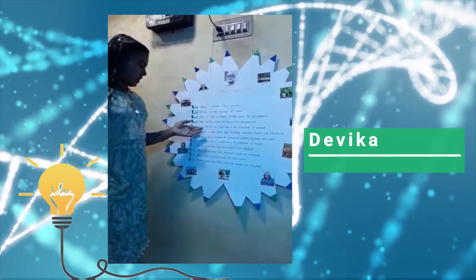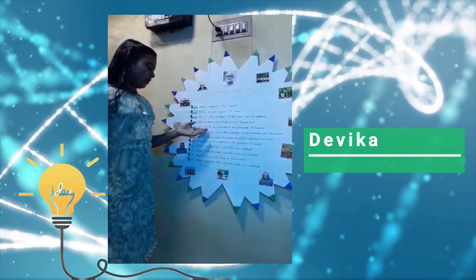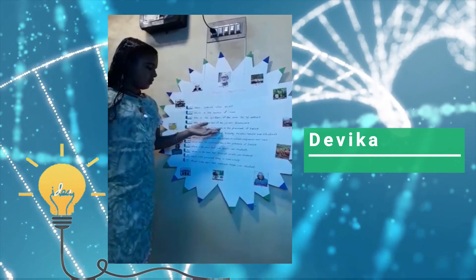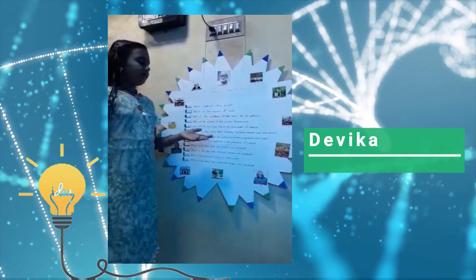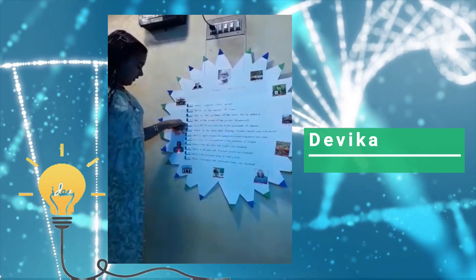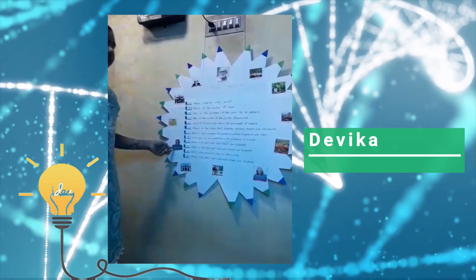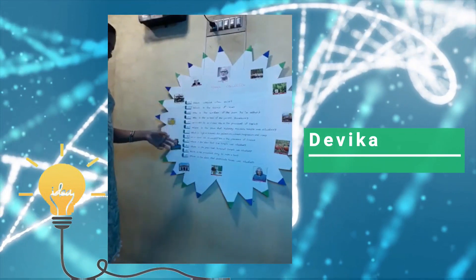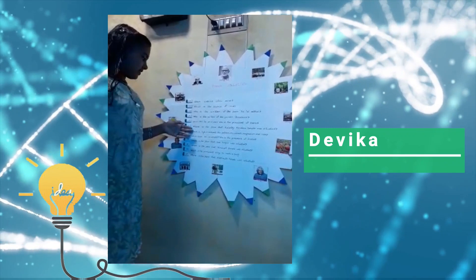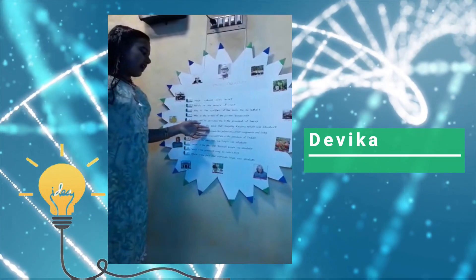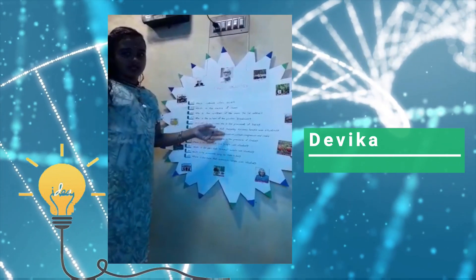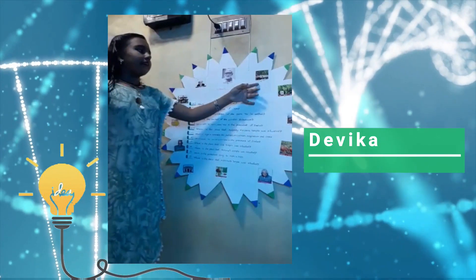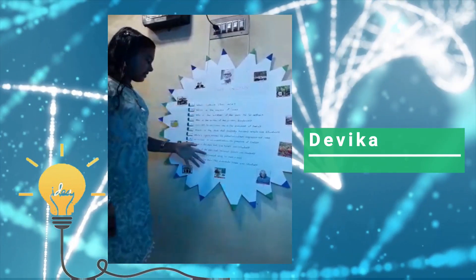The fifth question is: from 25.7.1997 to 25.7.2002, who was the President of India? We click the fifth button. The answer is K.R. Narayanan. The sixth question is: where is the Kalpati Krishna temple situated? We click and the answer is Kalpati Krishna temple, Palakkad.